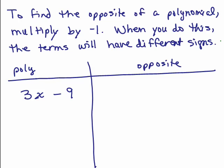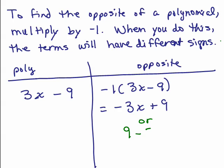To find the opposite of a polynomial, you can simply multiply -1. And when you do this, the terms will end up having different signs, opposite signs. So, for instance, take the polynomial 3x - 9. When you multiply by -1, imagine doing -1 times 3x - 9, right? You would get -3x + 9. You would get the same polynomial with opposite signs. And in this case, just notice that this could also be written as 9 - 3x.